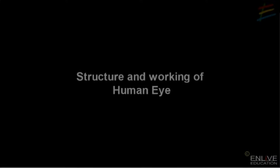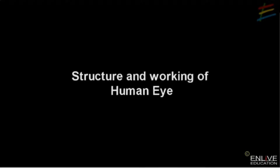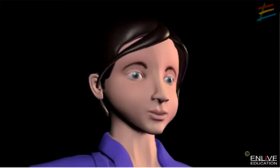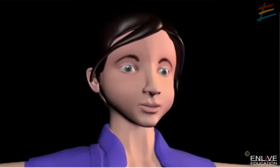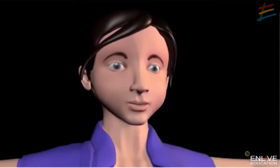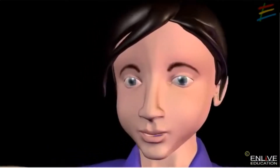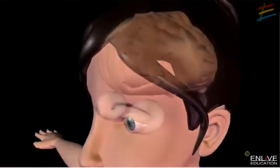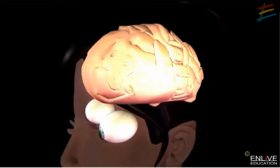Structure and working of the human eye. Nature has located the eye close to the brain so that its messages may arrive there quickly.